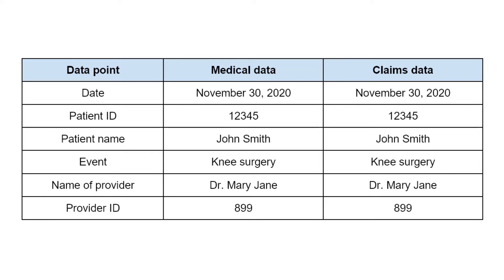As we can see from this table, there is a lot of overlap between medical data and claims data when reporting about the same event. Most electronic health record systems will automatically integrate medical data and claims data in order to avoid double work, such as filling in the patient name once for the medical data system and once for the claims data system.